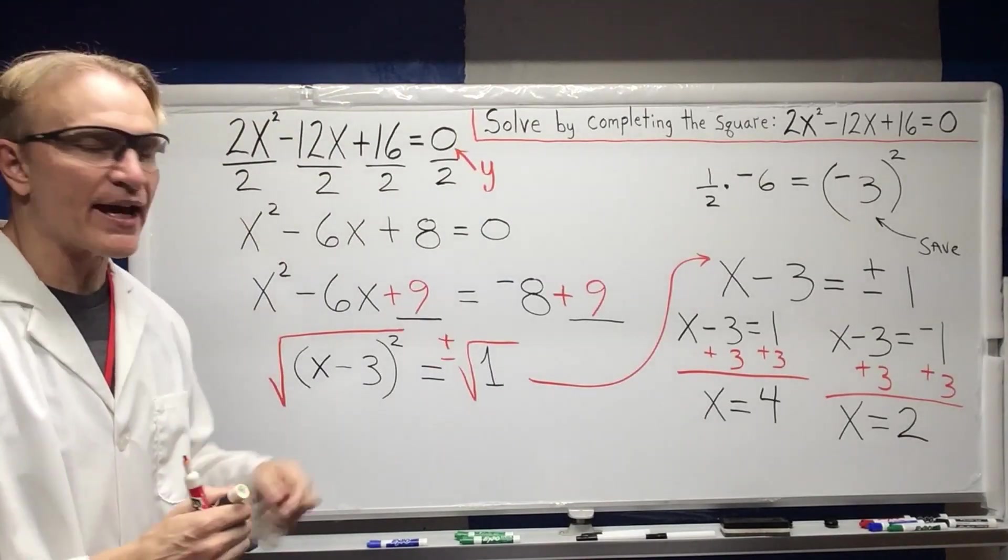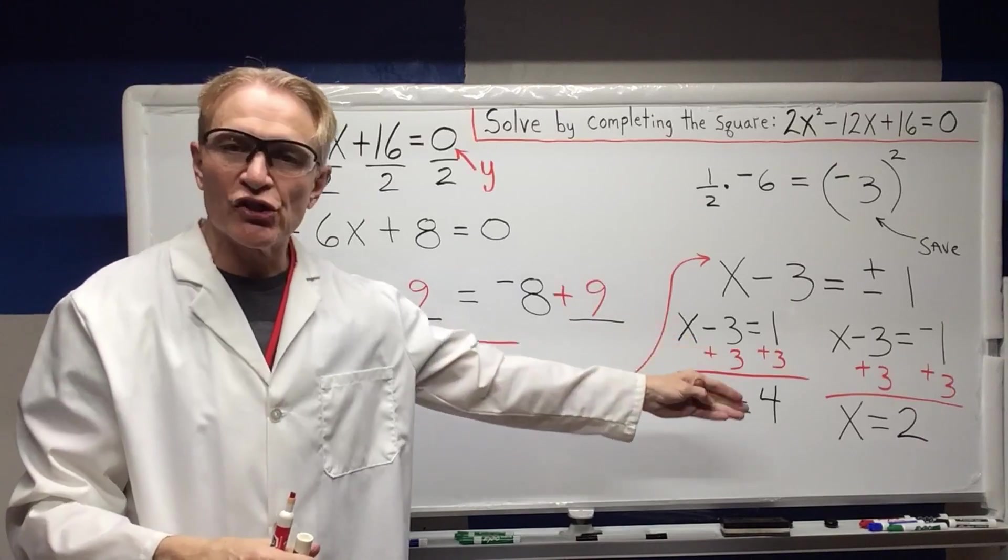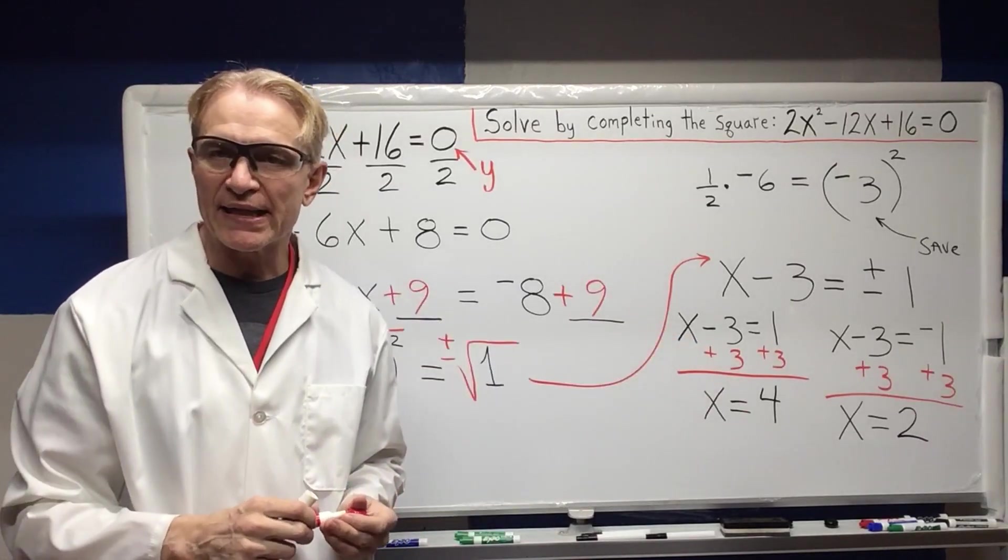So we know that our X's are at 4 and at 2 when Y is equal to zero.